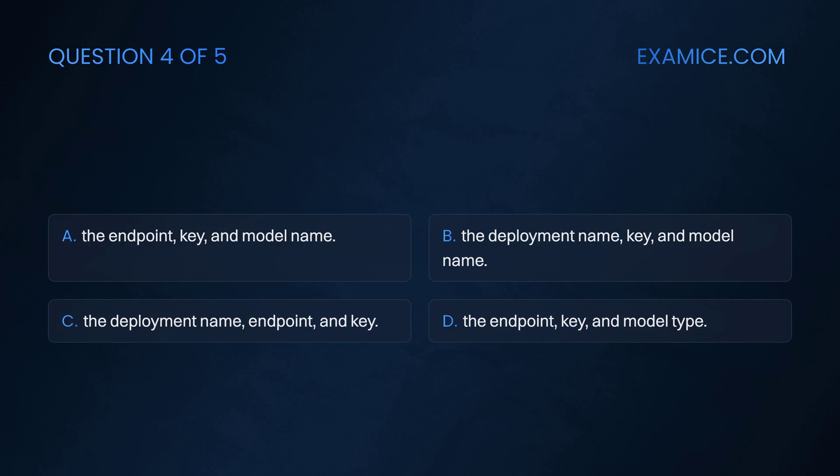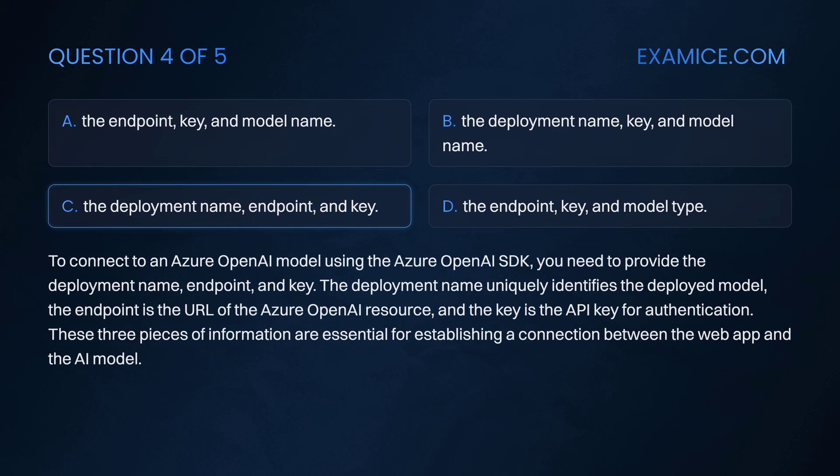To connect to an Azure OpenAI model using the Azure OpenAI SDK, you need to provide the deployment name, endpoint, and key. The deployment name uniquely identifies the deployed model. The endpoint is the URL of the Azure OpenAI resource, and the key is the API key for authentication. These three pieces of information are essential for establishing a connection between the web app and the AI model.